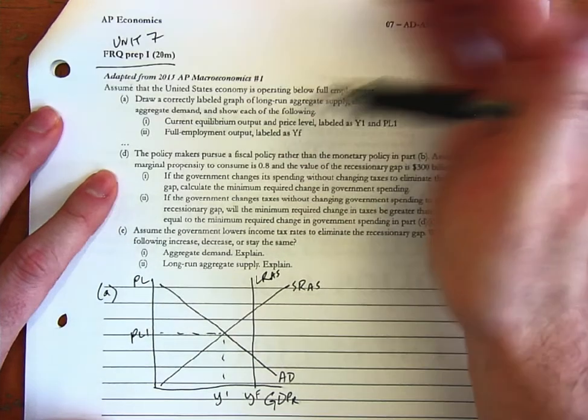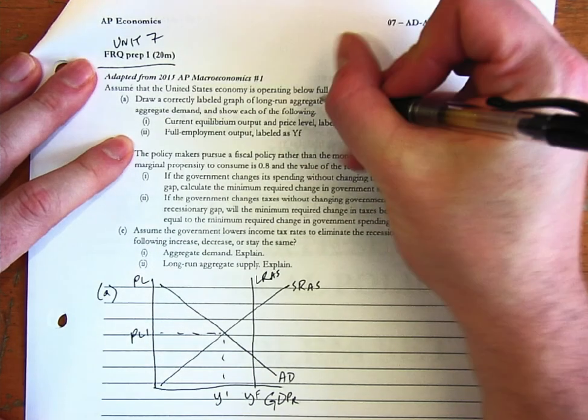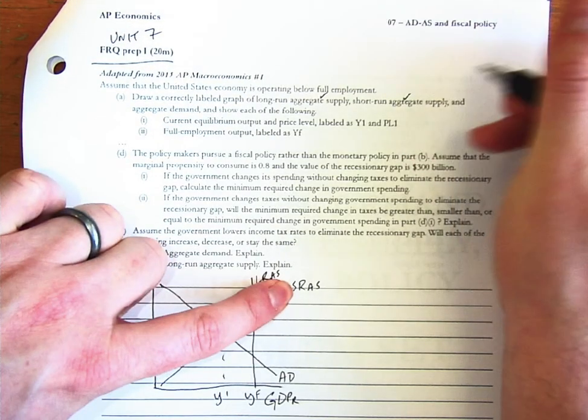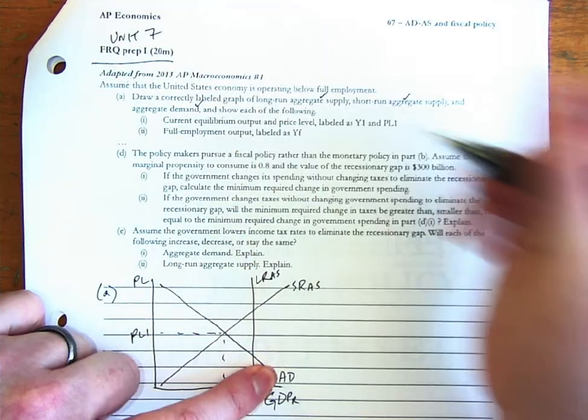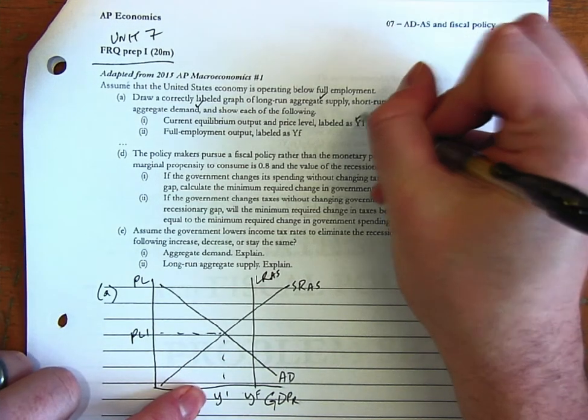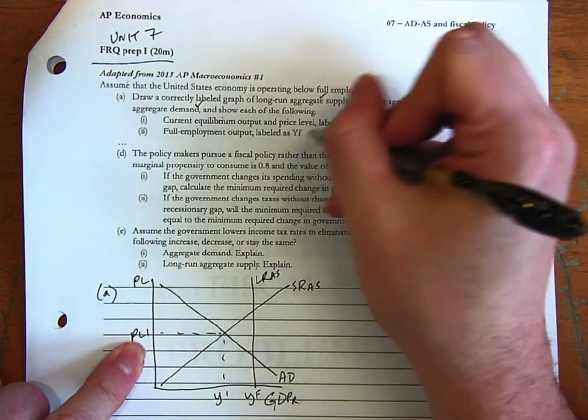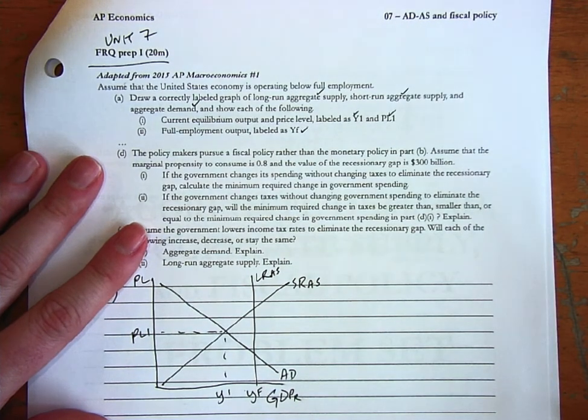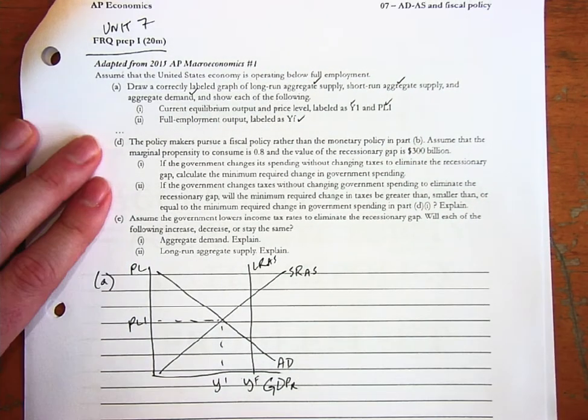A good technique is to say, did I do everything up here? Well, I did LRAS, that's here. I did SRAS here. I did aggregate demand, that's here. I did Y1, I did PL1, and I did YF. So check off the things as you do them. That way you don't miss an easy point.